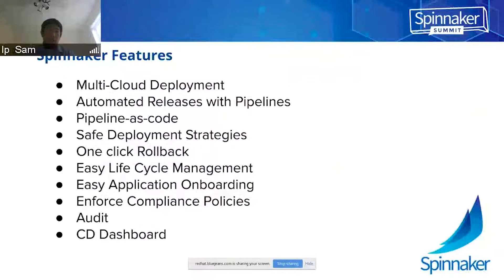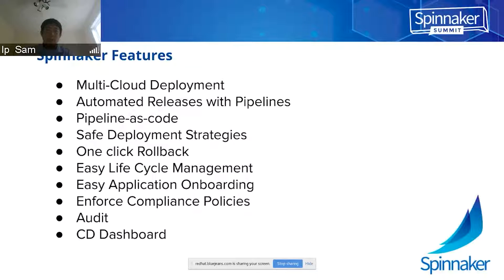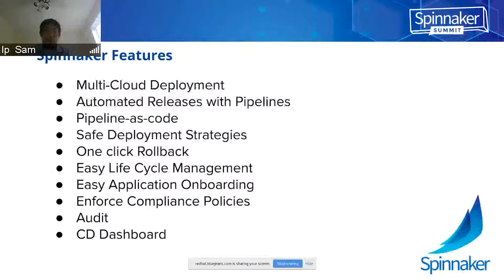Spinnaker has the following features. It supports multi-cloud deployment and automates releases with pipelines. The pipeline is code — you can encapsulate the pipeline using a Groovy script or some other script and save it in a Git repository, so the pipeline is developed and captured in code. You can set up different deployment strategies using a rolling update, blue-green deployment, and so on.